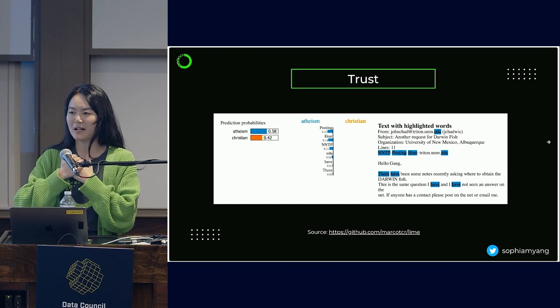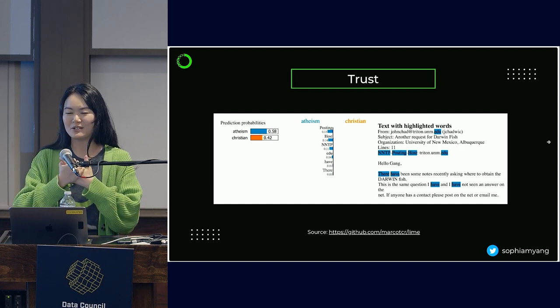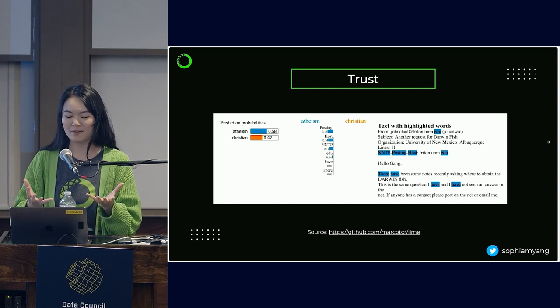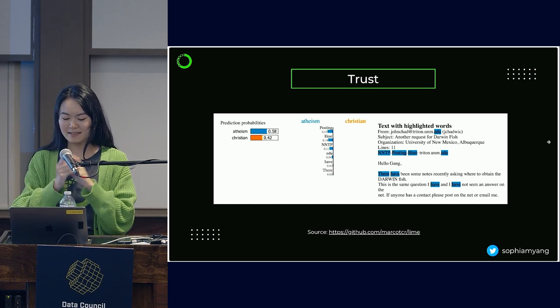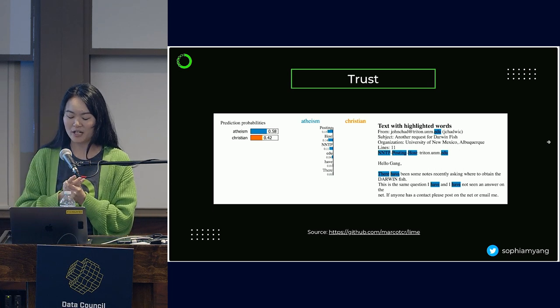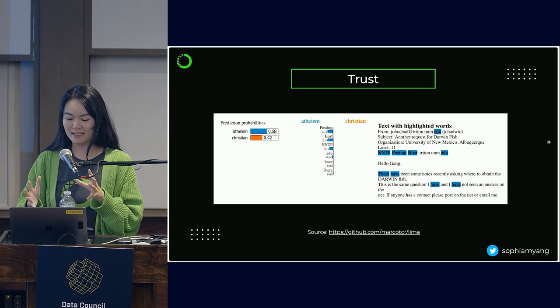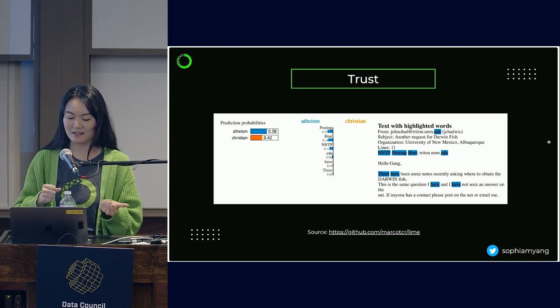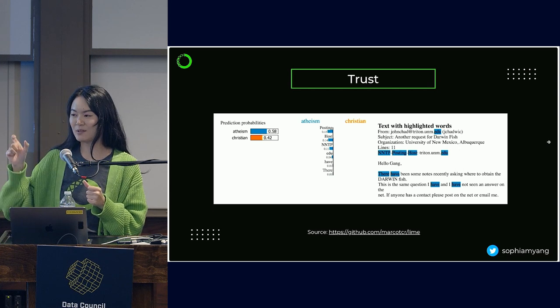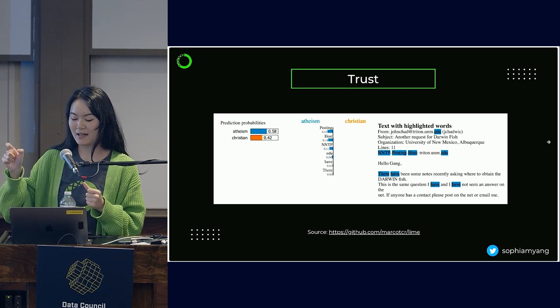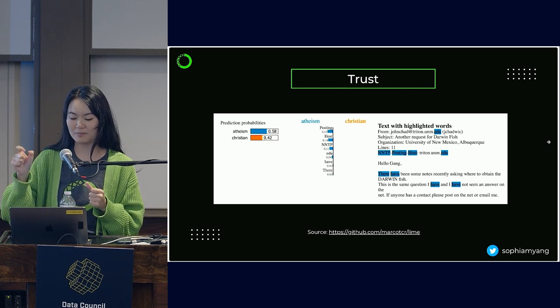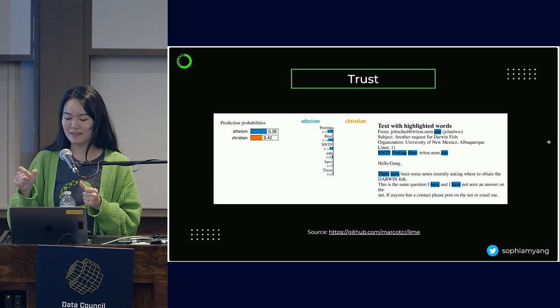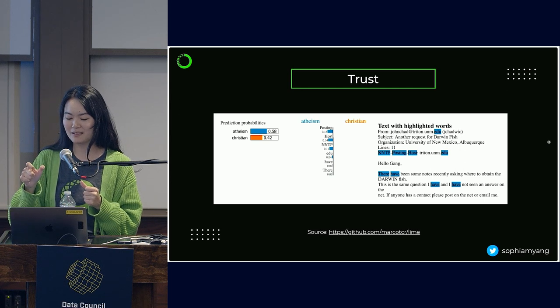And that goes into the next one, trust. You want to know if you are able to trust your model. You want your stakeholders to sign off your model to understand your model is trustworthy before launching. Here's an example using Lime where we're predicting either this email message is classified as assistive or question. And you can see the words highlighted here that's contributing to the prediction is actually irrelevant with the classification. So this model is probably not that trustworthy.